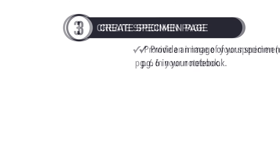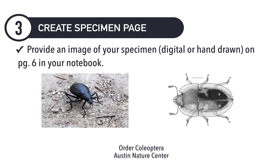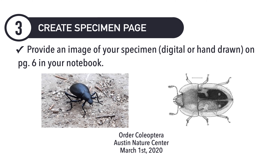Your illustration will appear on page six. It can consist of a printed out image or a detailed scientific drawing. No matter which you choose, it must also include the order, park, and date of collection. You have now finished your practice data collection and are prepared to collect your first ground truth sample. Thanks for tuning in.